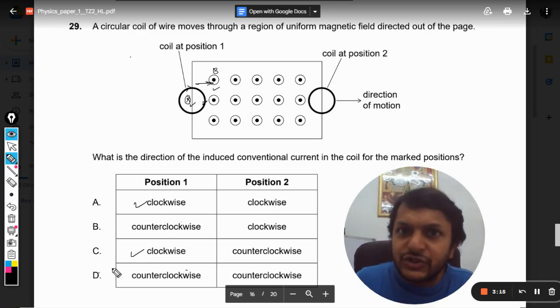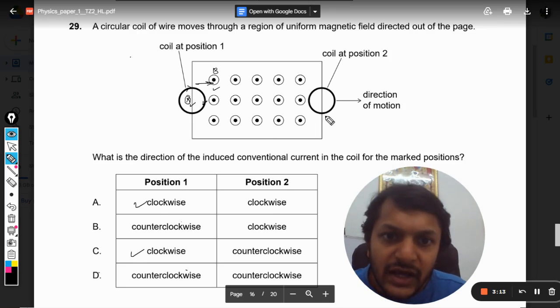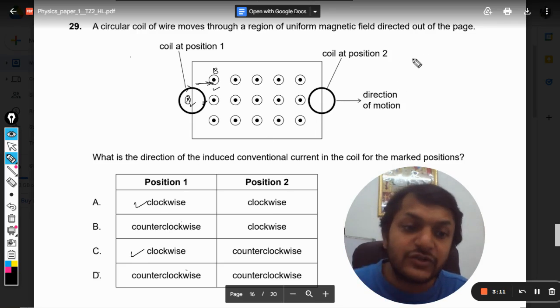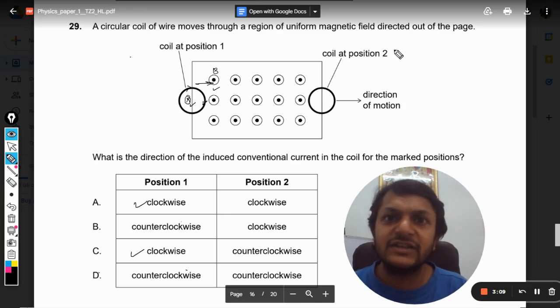Clockwise. And for position two, let us see. Now the first question that you are supposed to ask yourself is in which direction the flux is passing through the ring. So the flux is passing through the ring, the flux is coming out of the board, out of the laptop screen.